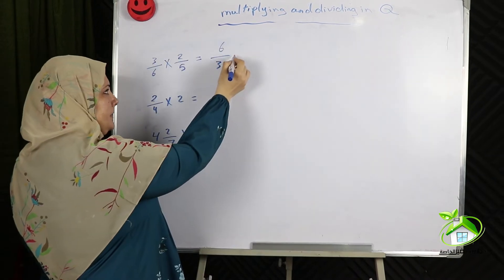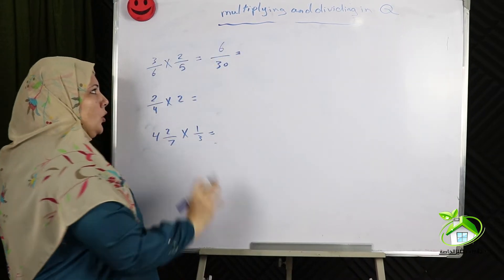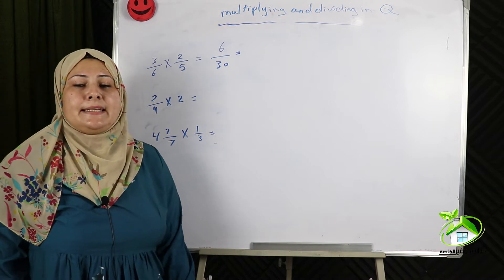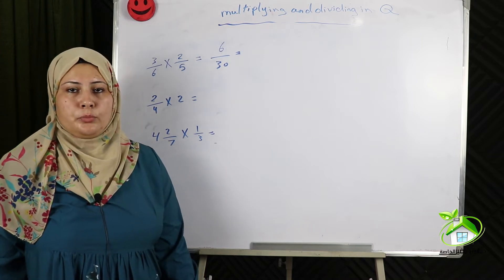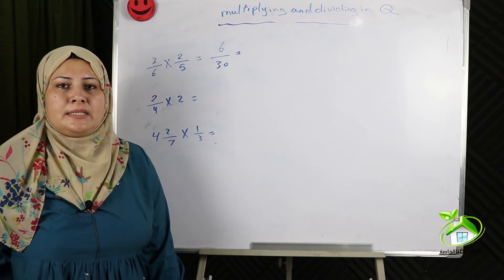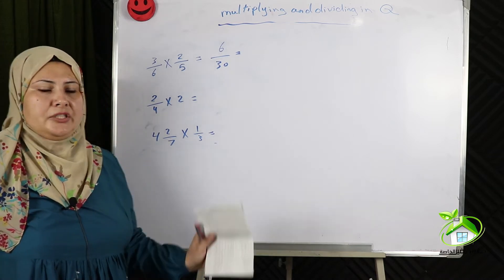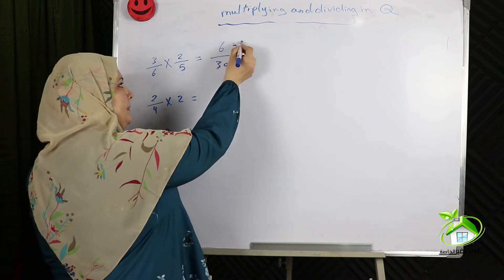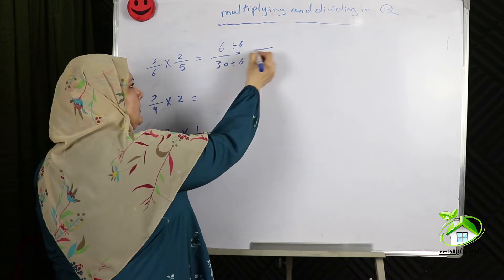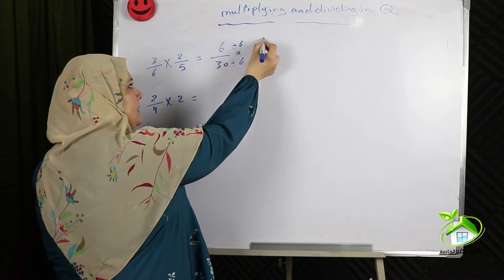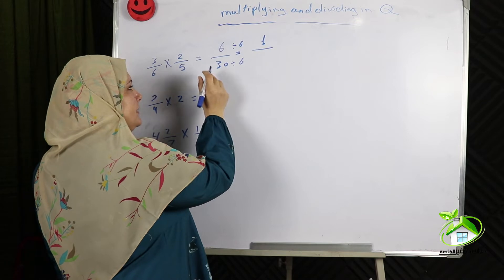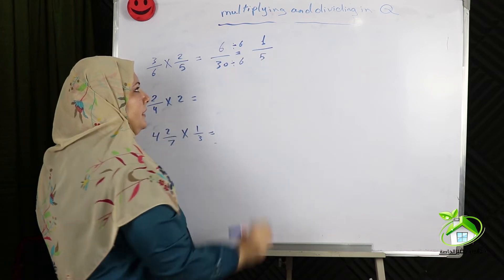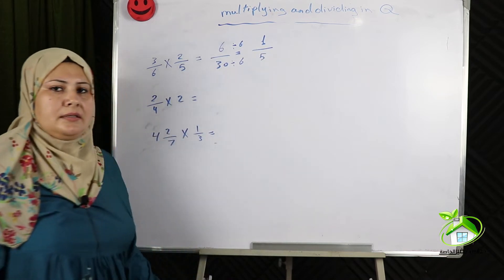Another example: the product equals 30 over 60. We should put the product of multiplication in its simplest form. So I will simplify this fraction — divide by 6: 30 divided by 60 equals 1 over 5.